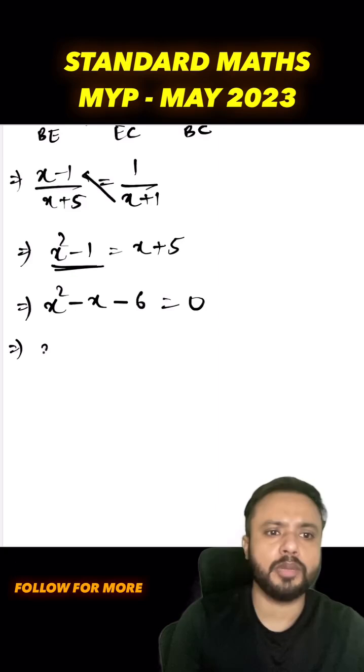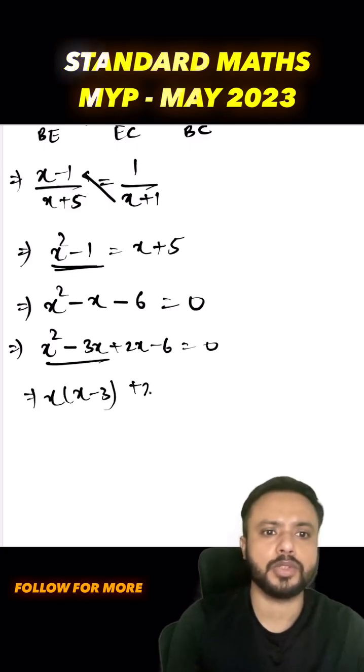Now I can split the middle term and write it as x squared minus 3x plus 2x minus 6 equals 0. From the first two terms I can take x common, so I'll write x minus 3 plus 2 into x minus 3 equals 0, so x minus 3 into x plus 2 equals 0.